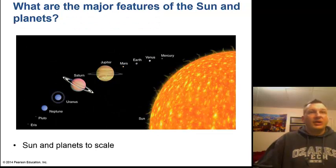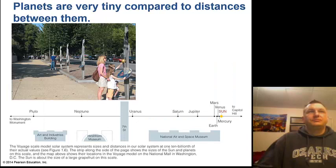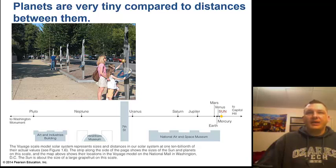Here are the major features of the Sun and the planets shown to scale. The Sun is quite large, taking up 99% of the mass in the solar system, and the largest planet is Jupiter. Planets are very tiny compared to the distances between them. Mercury, Venus, Earth, and Mars are all pretty close to the Sun, but then the planets go quite a distance further out.